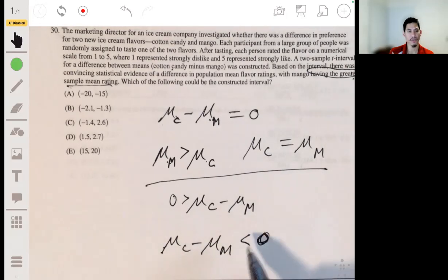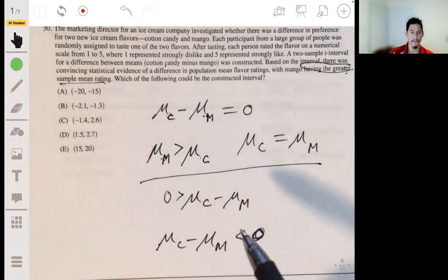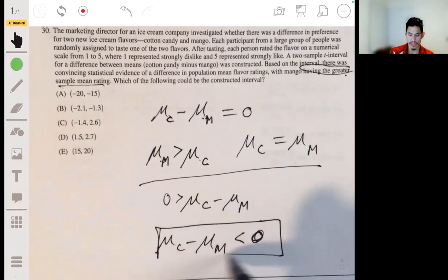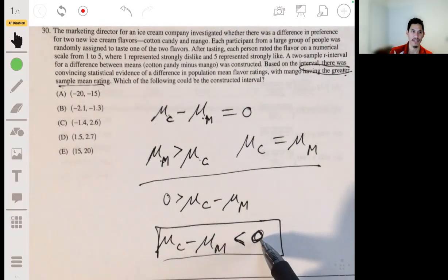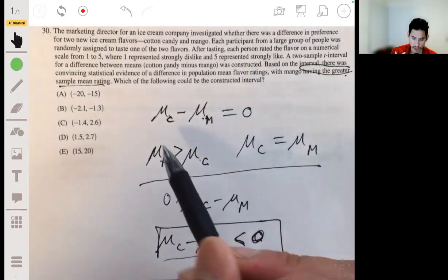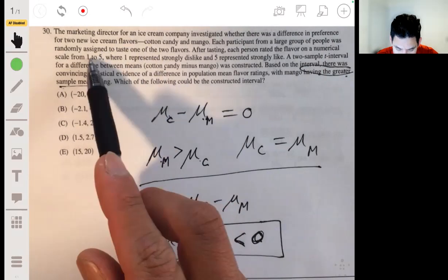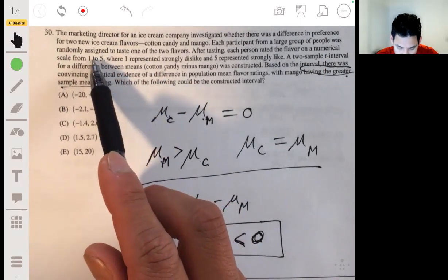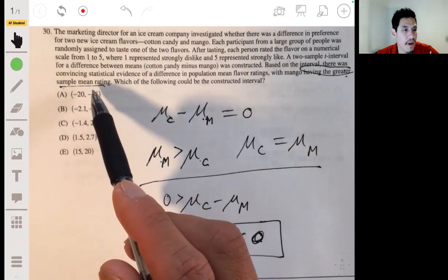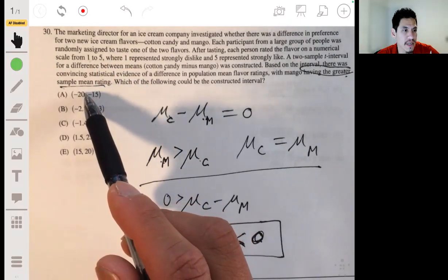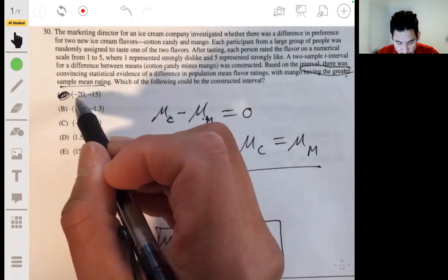So we want to see which of these would have a negative value, would be centered at a negative value. Because in order for this to be true, we're saying that it has to be less than zero, or it has to be a negative number. Since they can only be scales from one to five, we would rule out A, that's just too extreme. Their difference is not going to go that far.